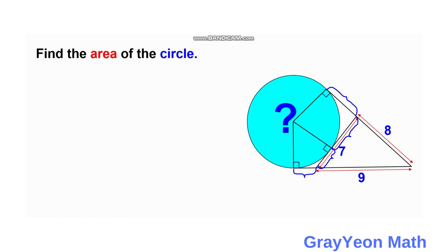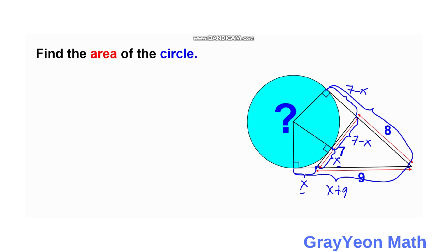We can label this length as x, and this as x, and this should be 7 minus x, and this should be 7 minus x also. These two segments share a point of intersection outside the tangent point. Next, we say that this length, which is x plus 9, is equal to this length, which is the sum of 7 minus x and 8.